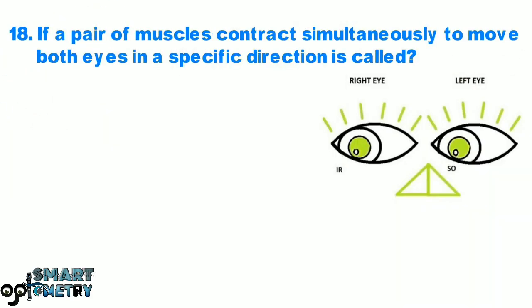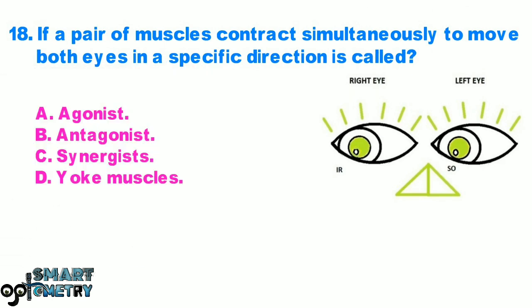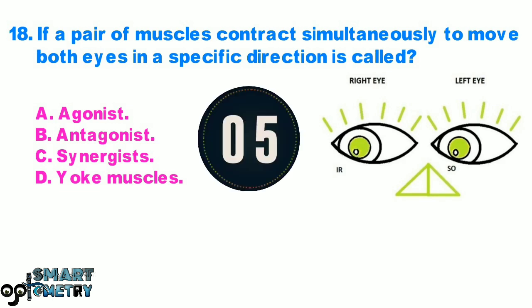Question 18. If a pair of muscles contract simultaneously to move both eyes in a specific direction, it is called: A. Agonist, B. Antagonist, C. Synergist, D. Yoke muscles.